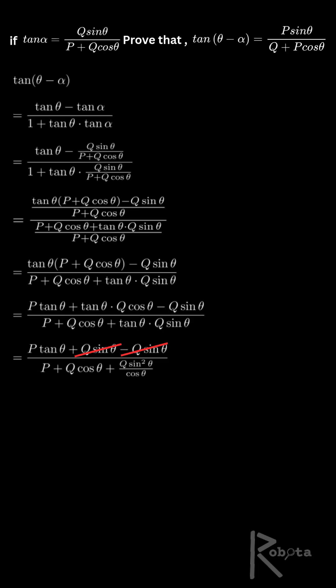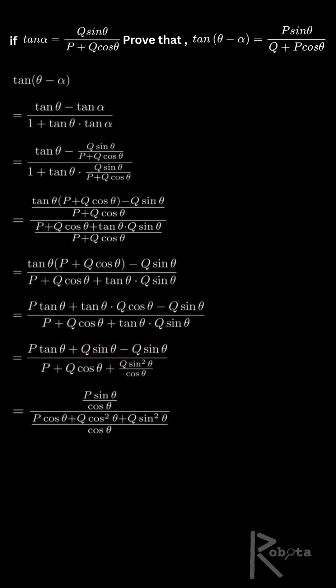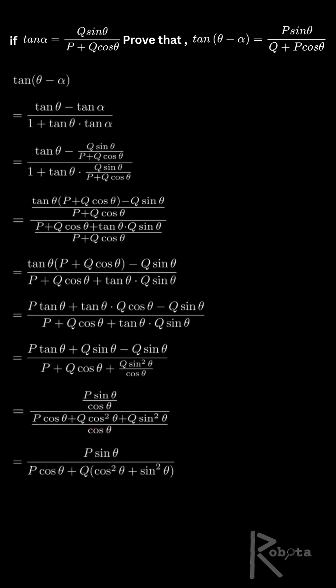In the denominator, we have p plus q cos theta plus q sine theta times tan theta. Replace tan theta by sine theta over cos theta, combine terms over cos theta, and use the identity sin squared plus cos squared equals 1.